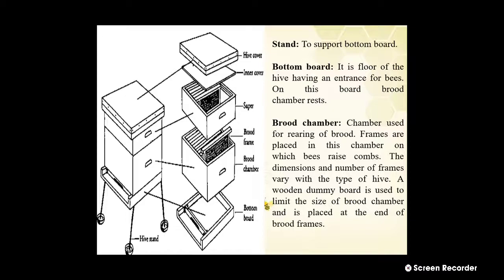The first part is the stand, whose function is to support the bottom board. The second part is the bottom board, which is the floor of the hive having an entrance for the bees; on this board the brood chamber is raised. The third part is the brood chamber, used for rearing of brood. Frames are placed in this chamber on which bees raise combs. The dimension and number of frames vary with the type of hive. A wooden dummy board is used to limit the size of the brood chamber and is placed at the end of the brood frame.